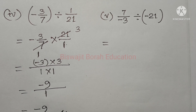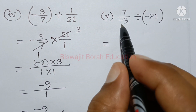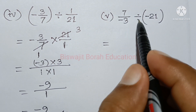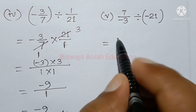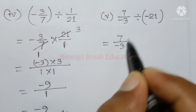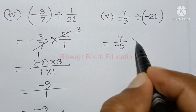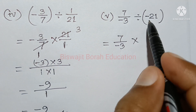Pass number 2 is equal to 7 by minus 3 divided by minus 21. So 7 by minus 3 divided by minus 1 is equal to 21.